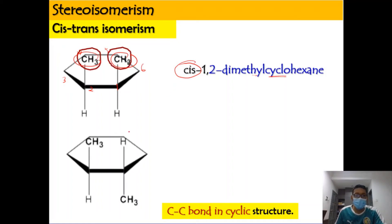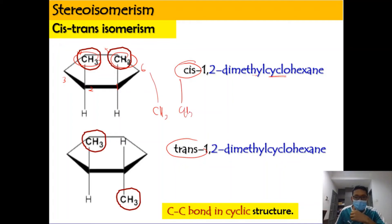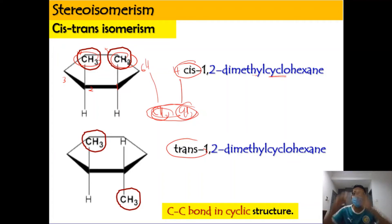When the same structure has its spatial arrangement placed with one methyl group downward, we call it trans-1,2-dimethylcyclohexane. Trans means the same species are diagonal to each other. For cis, it doesn't matter if CH3 and CH3 are both drawn downward and H and H upward — as long as they are in the same position and not diagonal, they are still called cis.